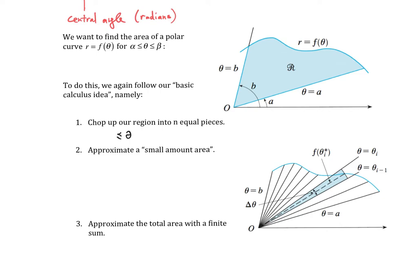That's going from a to b. When we chop that up into n equal pieces, we're going to call each width delta theta, and that's equal to b minus a divided by n.